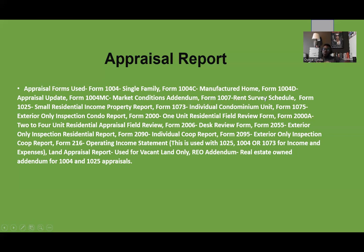Form 1007 is a rent survey schedule, used for properties when you are buying an investment property. Not everybody is 100% educated on the rental markets they're buying into, so form 1007 allows you to know what kind of rents you can charge in that market. While some people use Zillow or Redfin for estimates, form 1007 actually looks at all the rental properties in the area and what each is rented for, giving you a full survey.